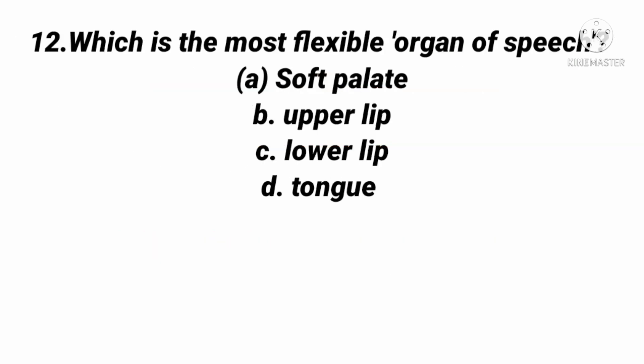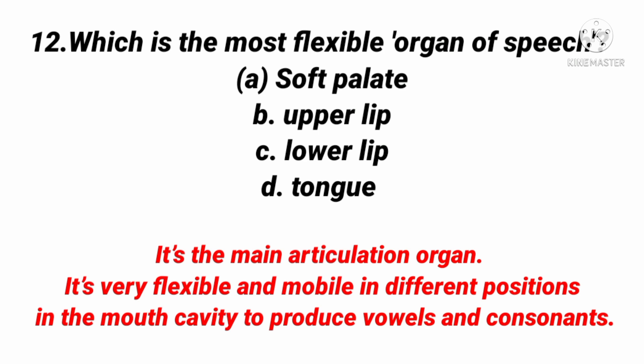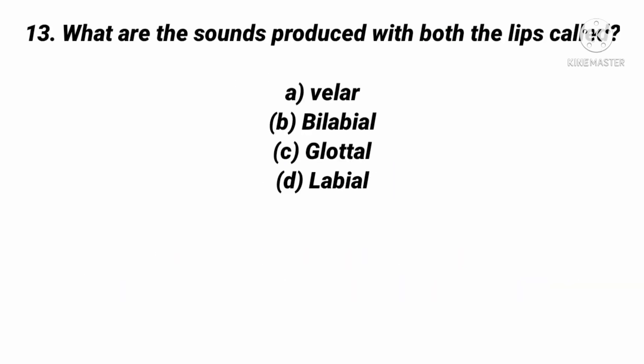The next question: Which is the most flexible organ of speech — soft palate, upper lip, lower lip, or tongue? The right answer is tongue. The tongue is the main articulation organ; it is very flexible and mobile, moving to different positions in the mouth cavity to produce vowels and consonants.